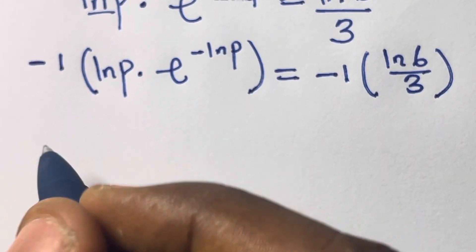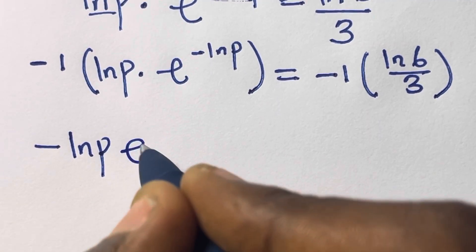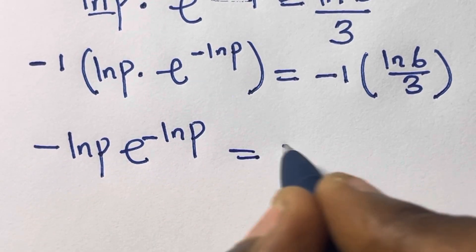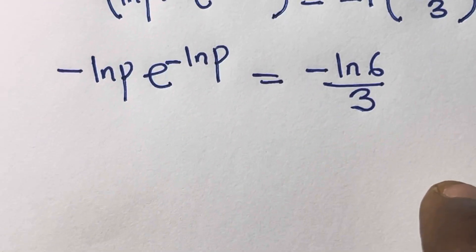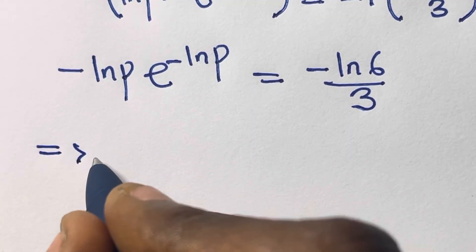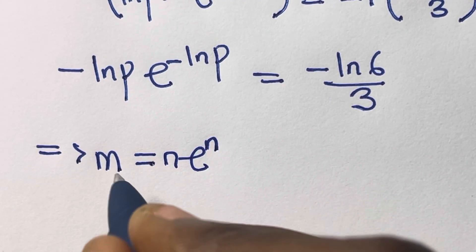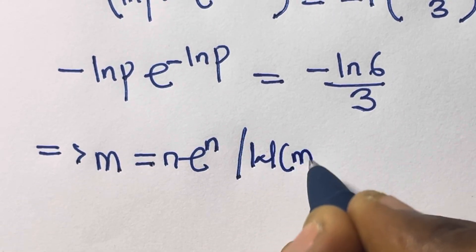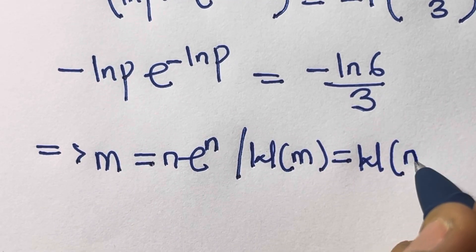So now we have minus ln(p) times e^(-ln(p)). You can see the base and the power are now the same — both are minus ln(p). This equals minus ln(6) divided by 3. Note that when m equals n·e^n, we can apply the Lambert W function.